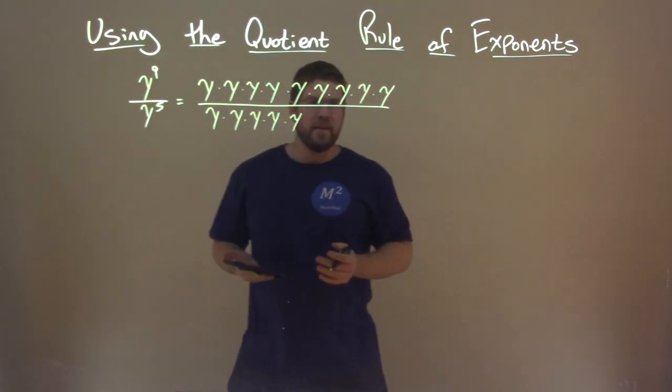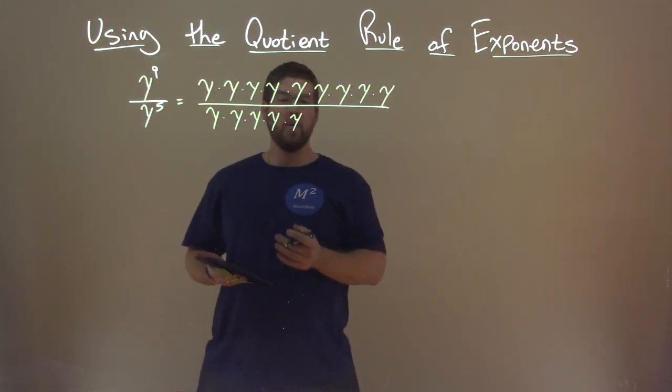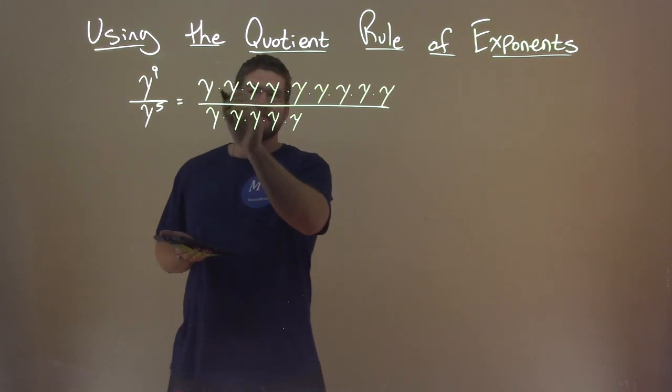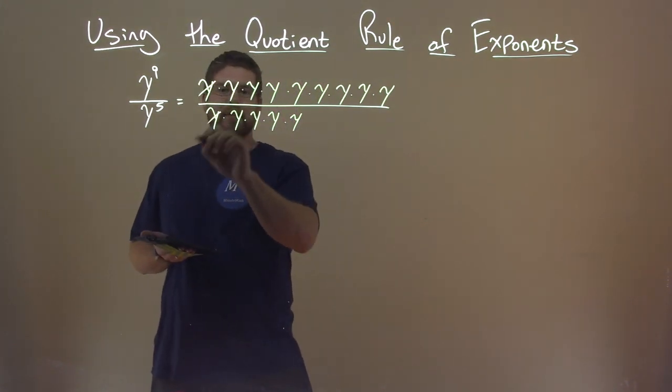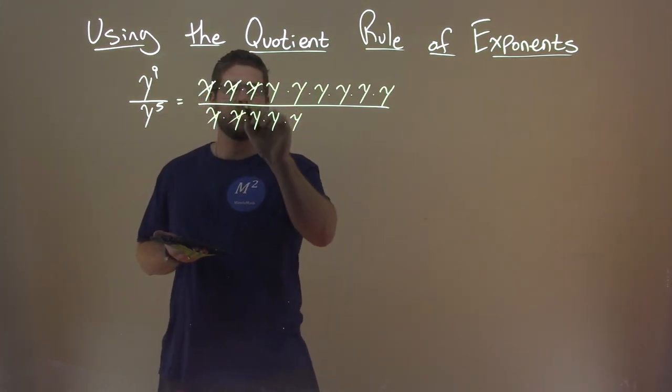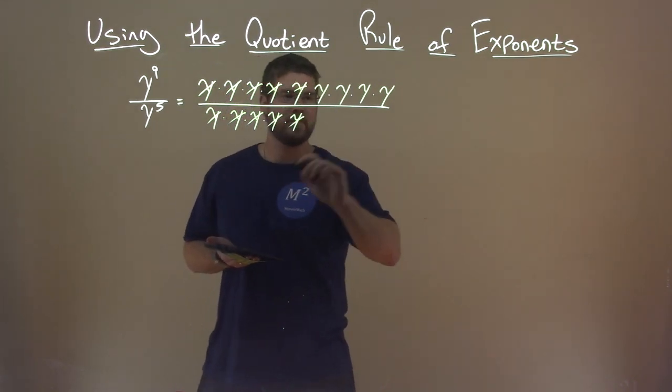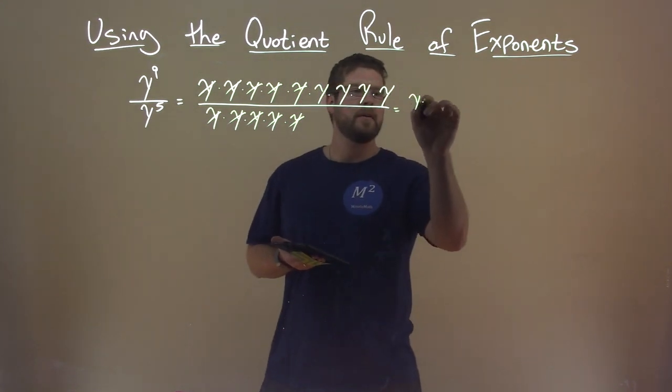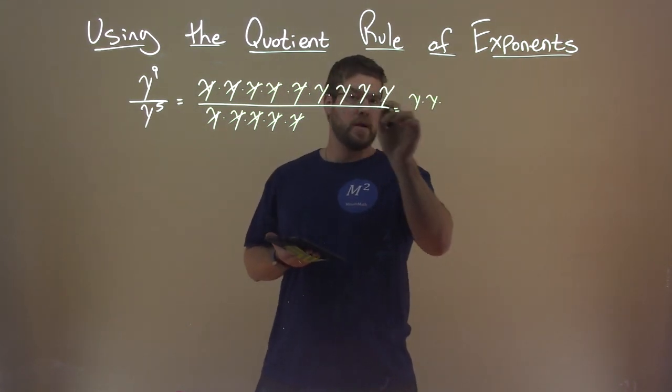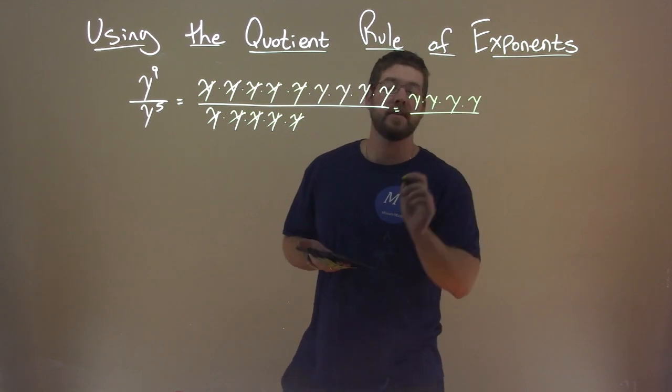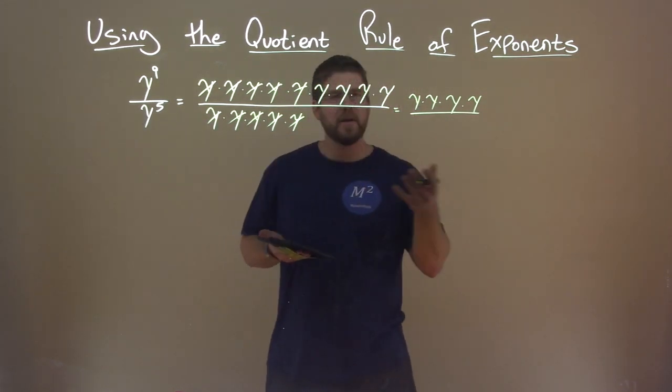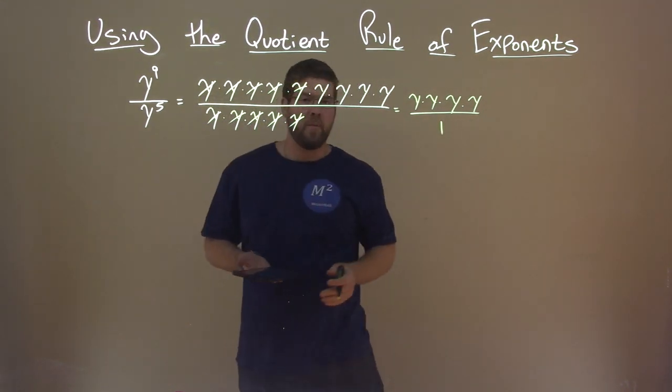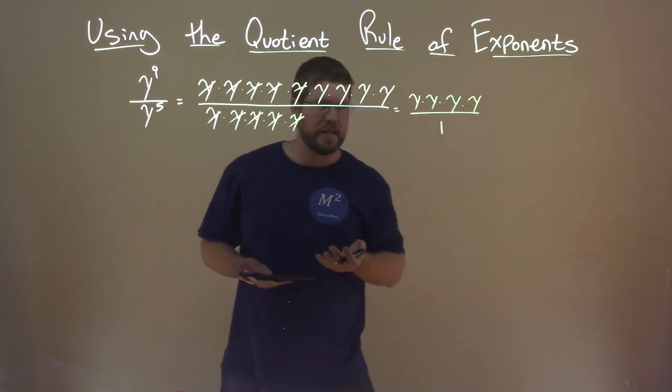So, now we've expanded this, we know, hopefully, that we can start crossing out the ones that match up, right? So, y divided by y cancels, another one cancels, another one cancels, another one cancels, and another one cancels. So, we're left with, in the numerator, y times y times y times y, and in the denominator, nothing, but we don't write zero, we write one, right? Because remember, y divided by y is one, one over one essentially there.